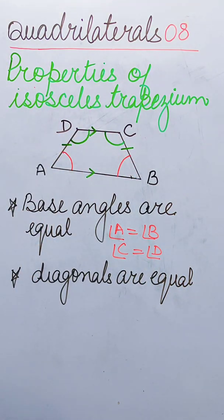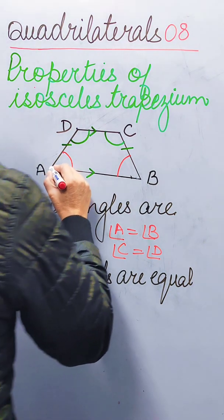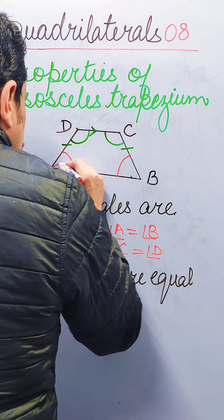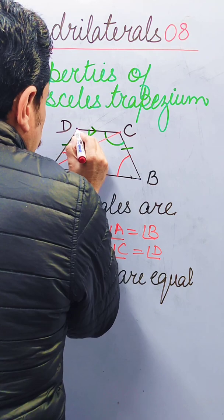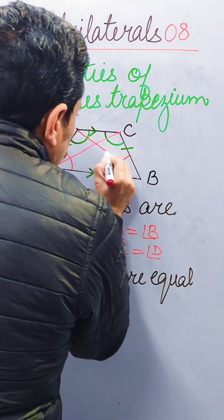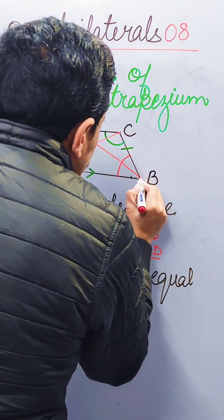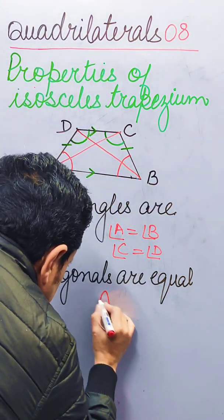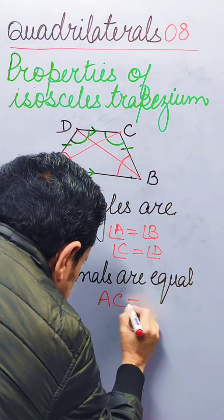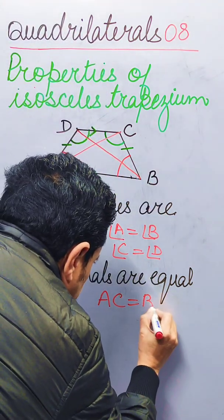The second property: diagonals are equal. That is, AC is equal to BD.